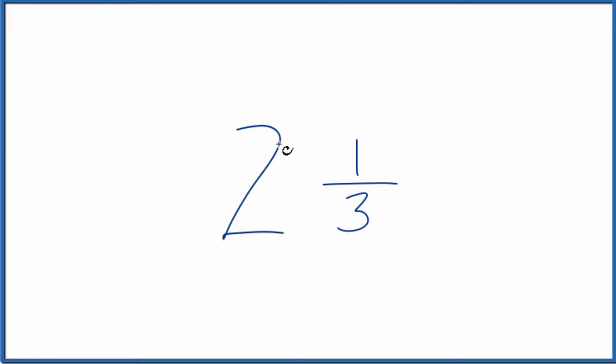So right now this is a mixed number because we have a whole number, the 2, and then we have our fraction, the 1 third. To get this to an improper fraction, here's how you do it.